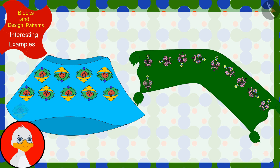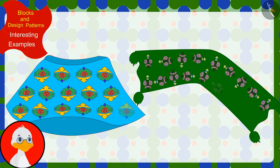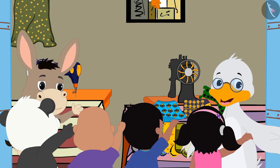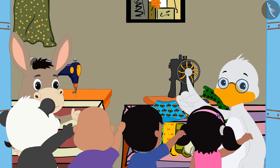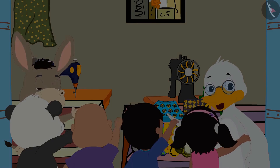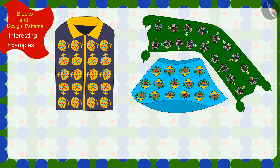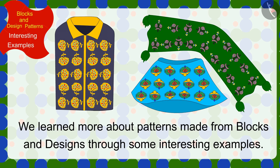Uncle also found the rules of those incomplete patterns and completed them. All the villagers are liking the new patterned clothes sold at uncle's shop a lot! Children, in this video we learned more about patterns made from blocks and designs through some interesting examples. In the next video we will see some common mistakes related to this.